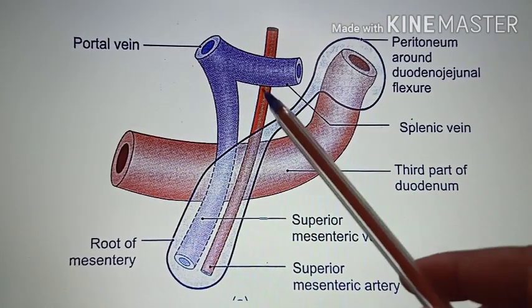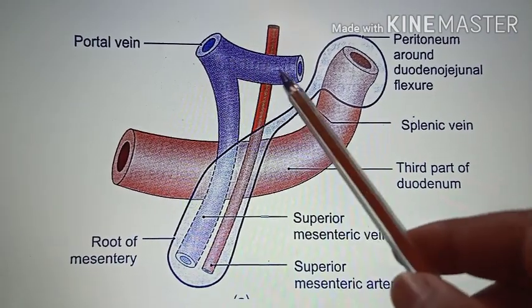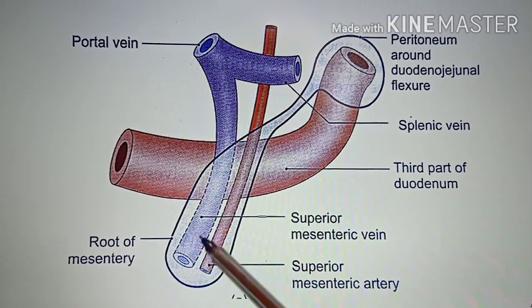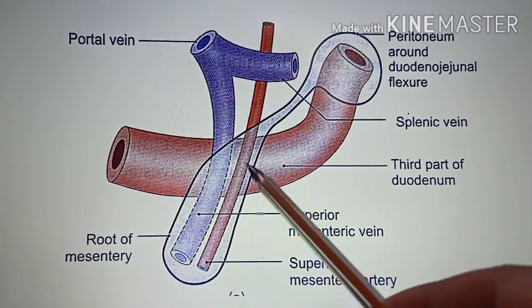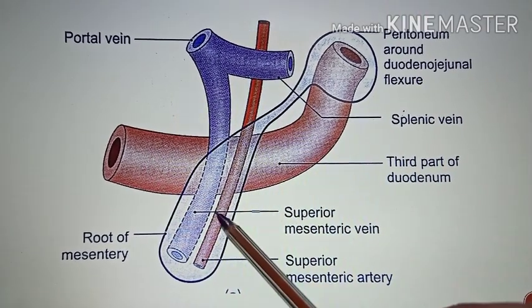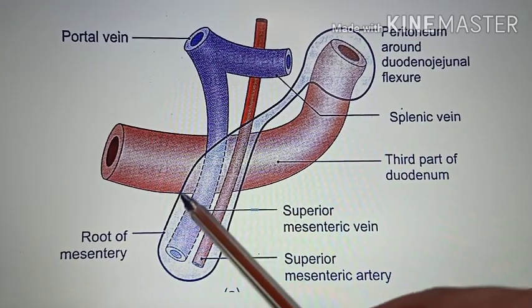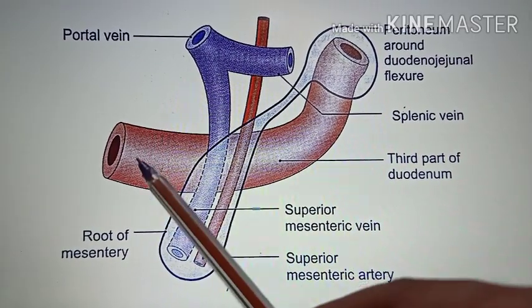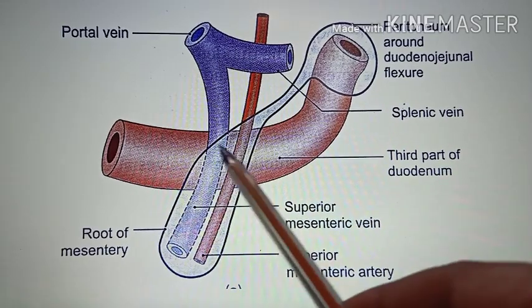In this picture you can see the portal vein, the splenic vein, the superior mesenteric vein, the superior mesenteric artery, the root of mesentery, and the third part of the duodenum.